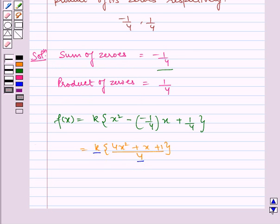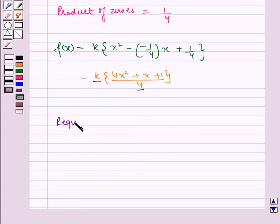Therefore, the required polynomial is f(x) equals 4x squared plus x plus 1.